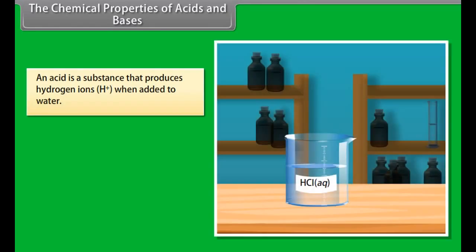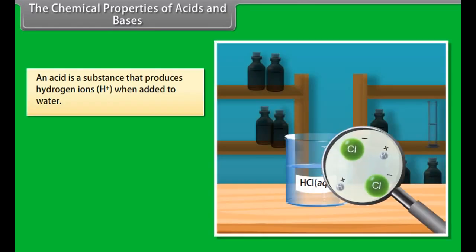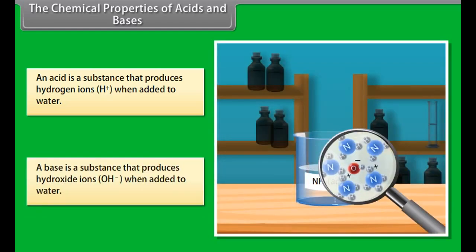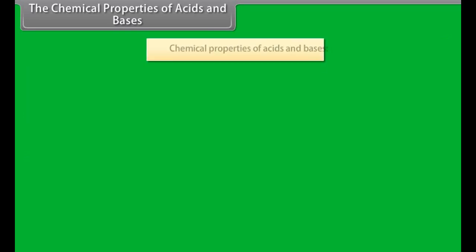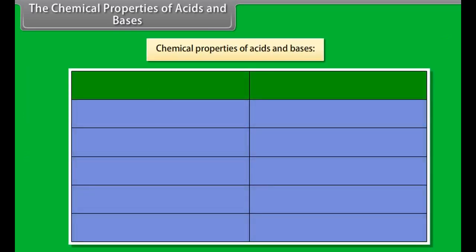The chemical properties of acids and bases. An acid is a substance that produces hydrogen ions when added to water, whereas a base is a substance that produces hydroxide ions when added to water. Both acids and bases have different chemical properties. Let us look at their properties.